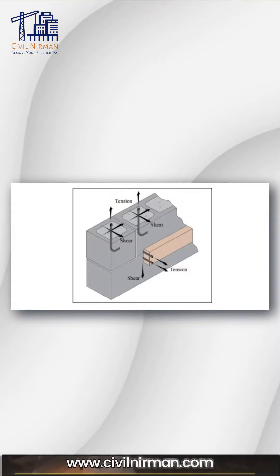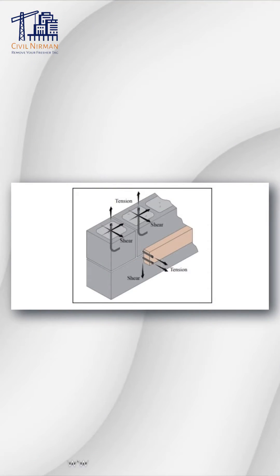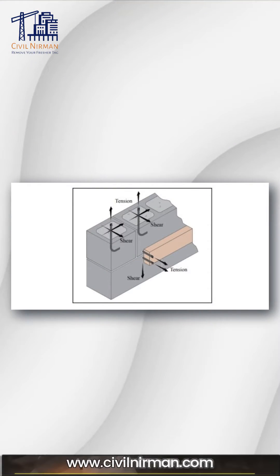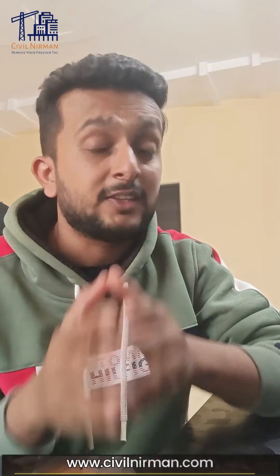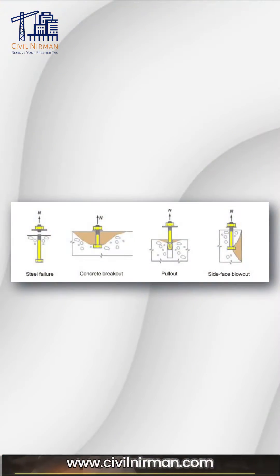Anchor rods are normally used to connect the column base plate to the concrete support. In the design of anchor rods, tension and shear are handled separately, and then the interaction effects are checked.